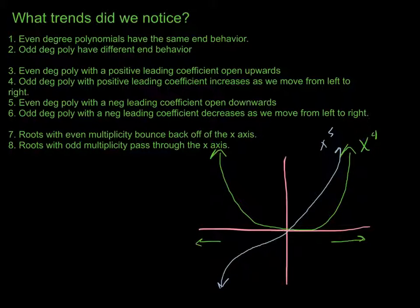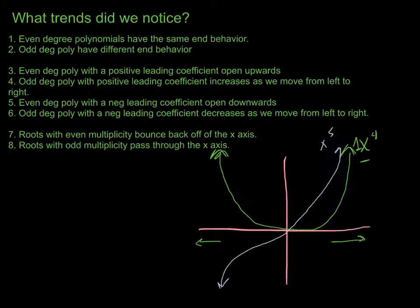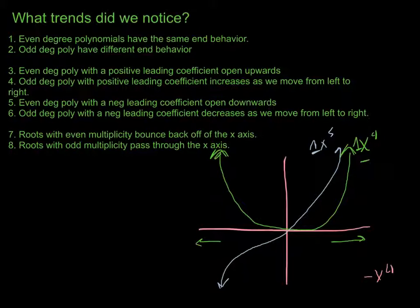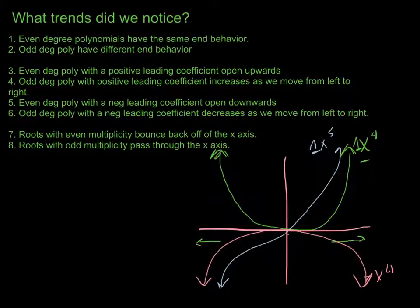We can get even more specific. For an even-degree polynomial with a positive leading coefficient — like x to the 4th where the coefficient is positive 1 — every value is going to be positive, so it opens upward. What if instead we have negative x to the 4th? All the values that were first positive are now negative because of the negative out front, so it flips or reflects over the x-axis and opens downward.